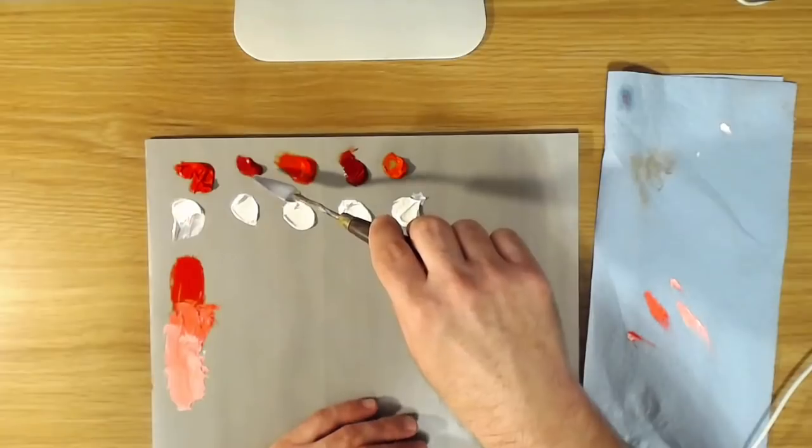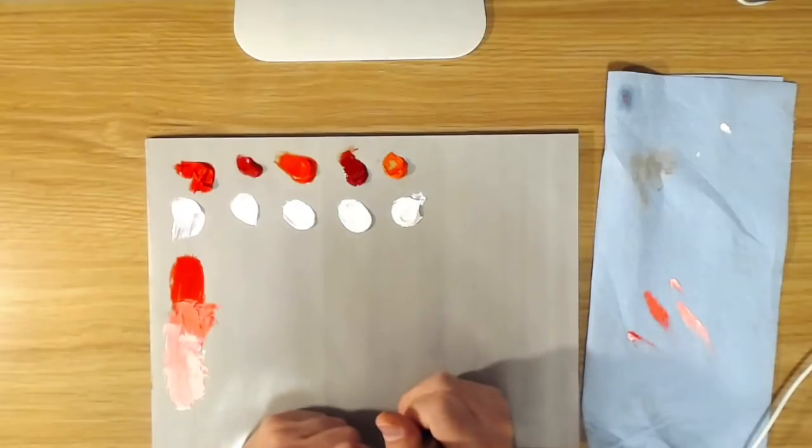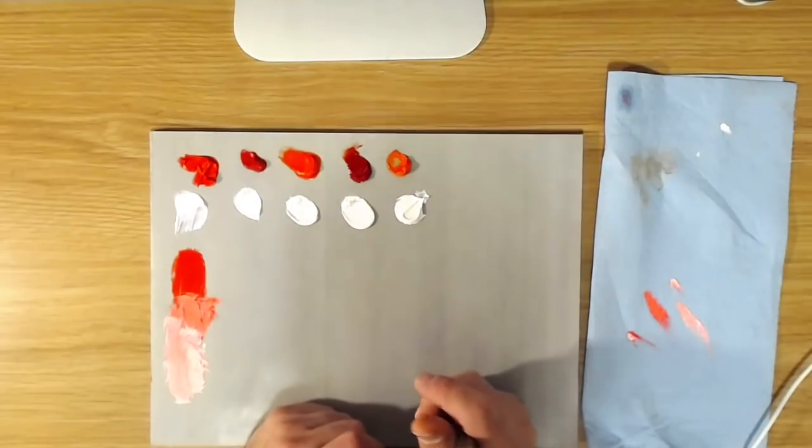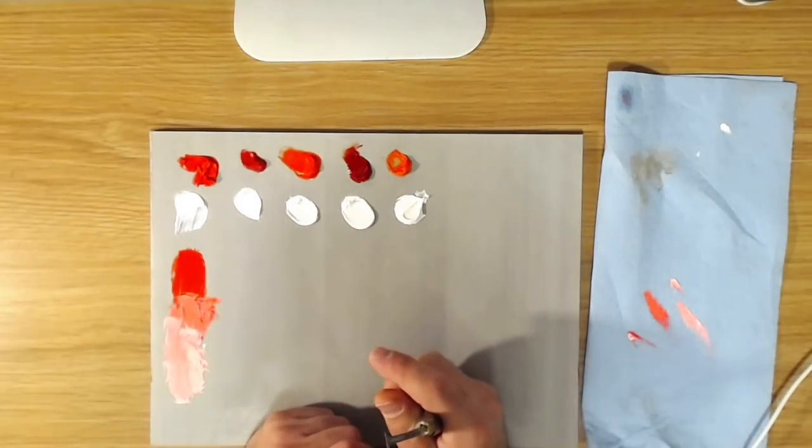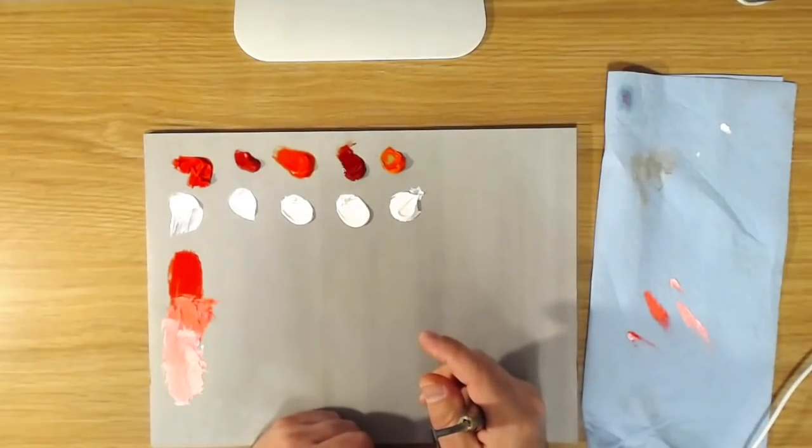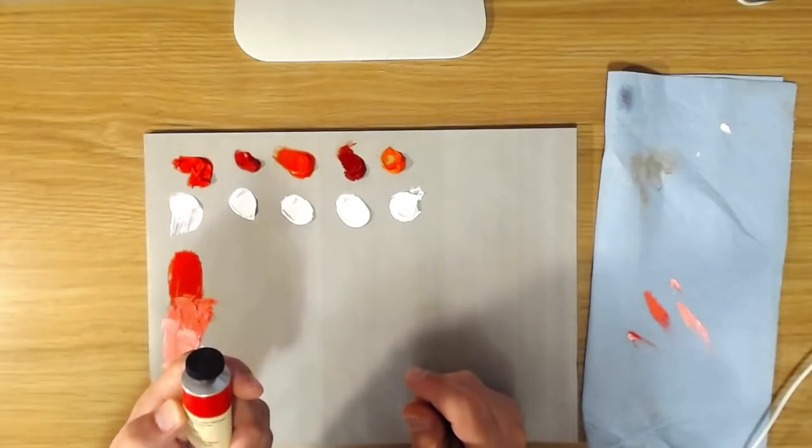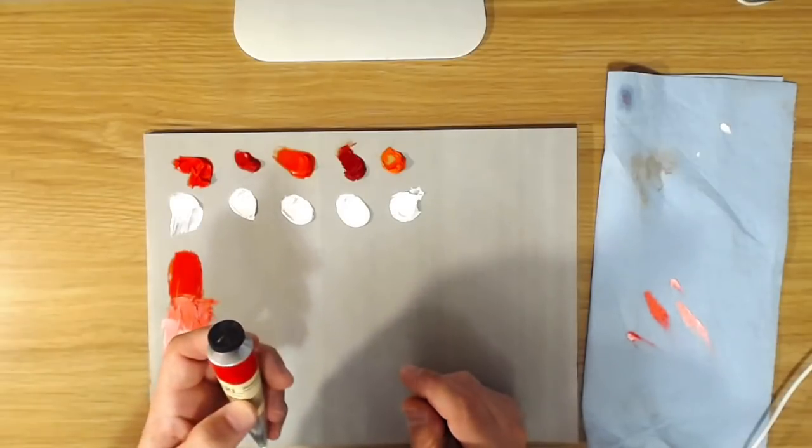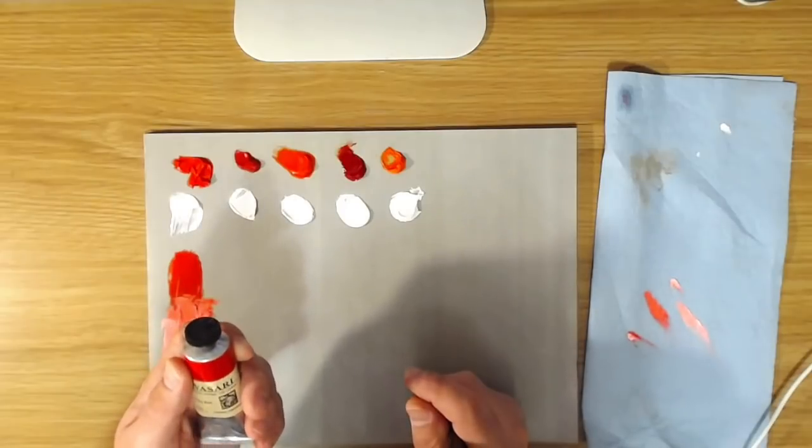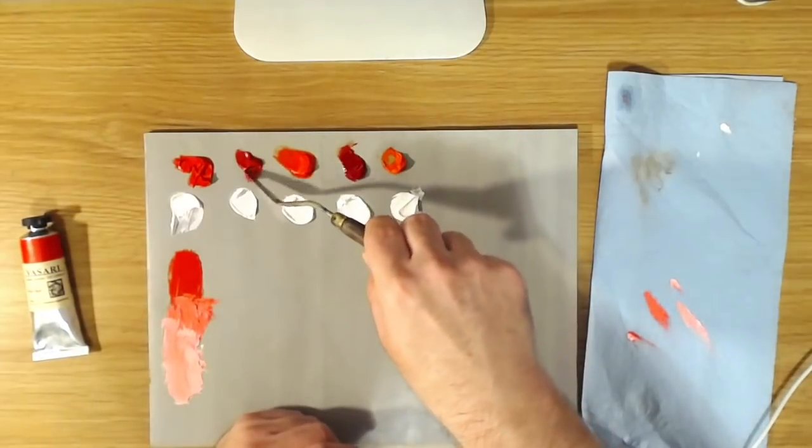Moving on to the next one, we have quinacridone red. Last time in my other red video, I talked about quinacridone magenta and quinacridone rose, also known as permanent rose, which are variations. Permanent rose is pigment violet 19 and quinacridone magenta is pigment red 122. But there's another variation of the pigment violet 19 which is called quinacridone red, and that's what this is here.